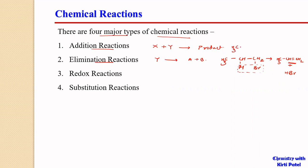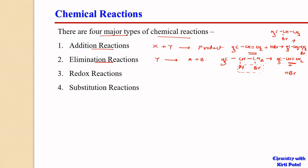In an addition reaction, CH3-CH=CH2 plus HBr gives rise to CH3CH2CH2Br, or bromine can get attached to the middle carbon giving 2-bromopropane — so we can have 1-bromopropane or 2-bromopropane depending on conditions. The important feature here is that the multiple carbon-carbon bond is reduced to a carbon-carbon single bond. In addition reactions, there is a reduction in the number of bonds between carbon atoms.